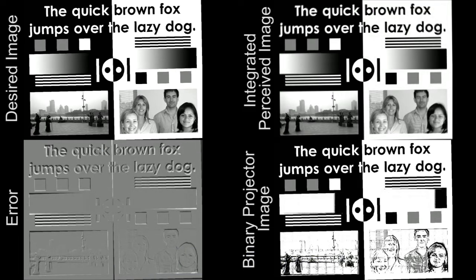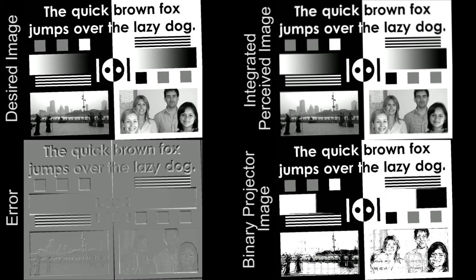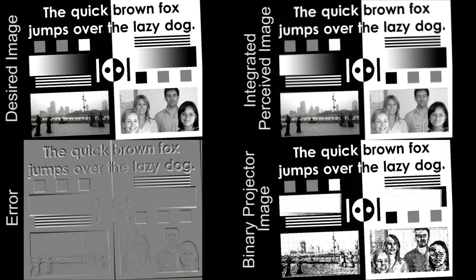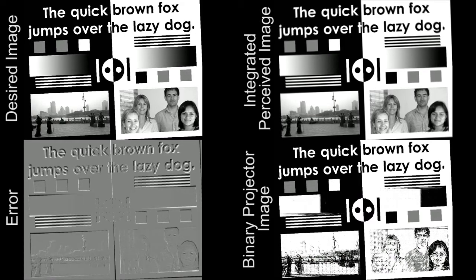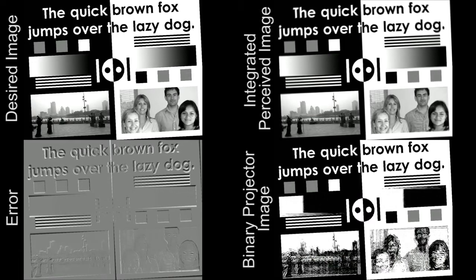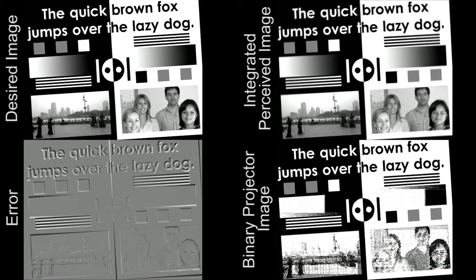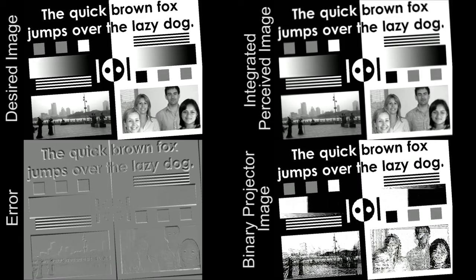We use a simple algorithm to compute the difference between a running estimate of the perceived image by the viewer, here integrated over the past 64 frames, and the image the user was intended to see at that instant. The difference is used to compute a new binary frame to display that adjusts the perceived image to best match the desired image.